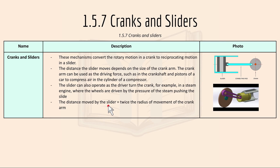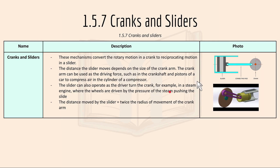1.5.7 is cranks and sliders. These mechanisms convert rotary motion in a crank to reciprocating motion in a slider. The distance the slider moves depends on the size of the crank arm, and the crank arm can be used as a driving force such as the crankshaft and pistons of a car to compress air in a cylinder. The slider can also operate as the driver to turn the crank, for example in a steam engine where the wheels are driven by steam pressure pushing the slider. The distance moved by the slider equals twice the radius of the crank arm's movement.